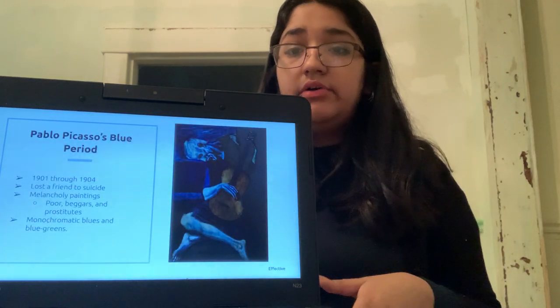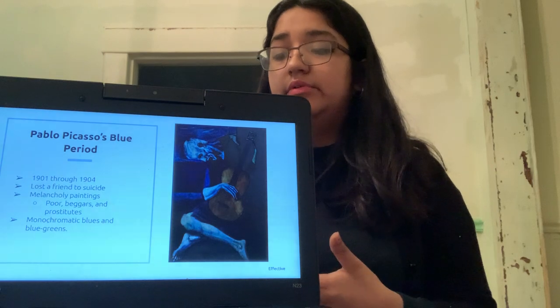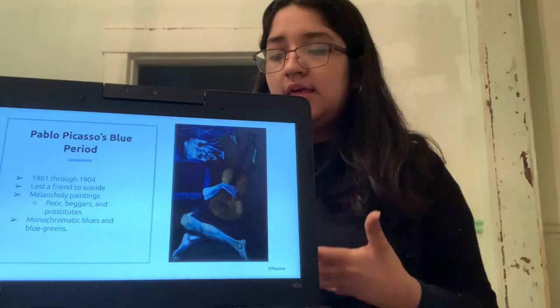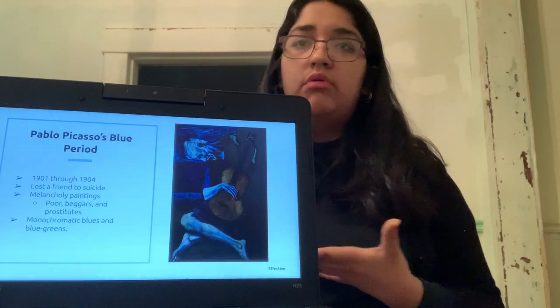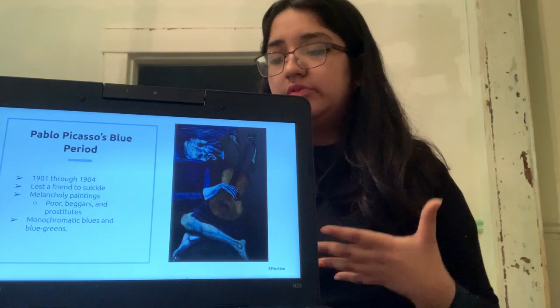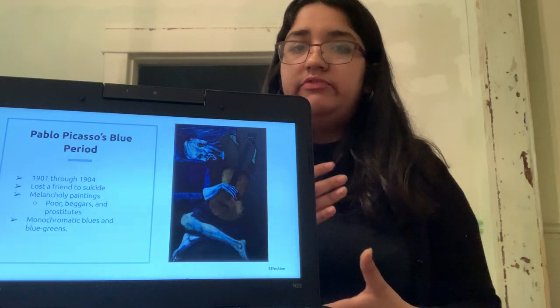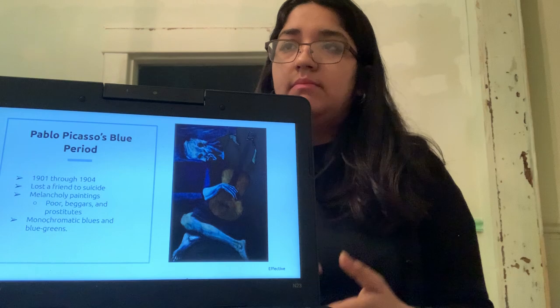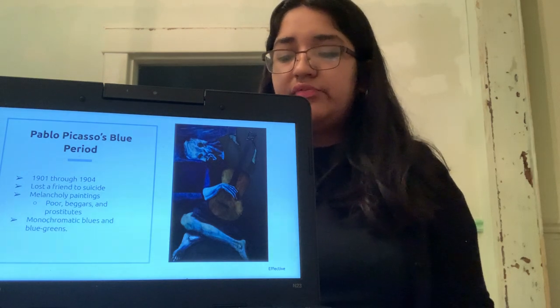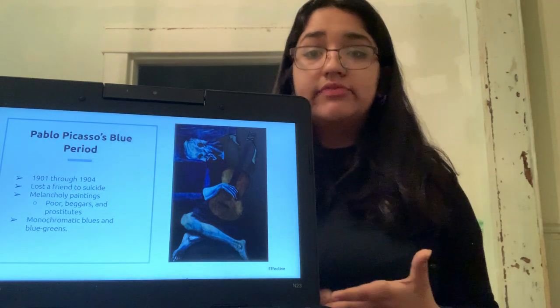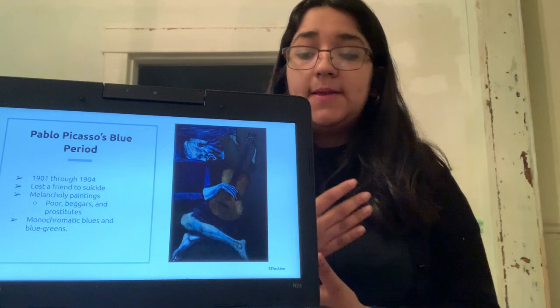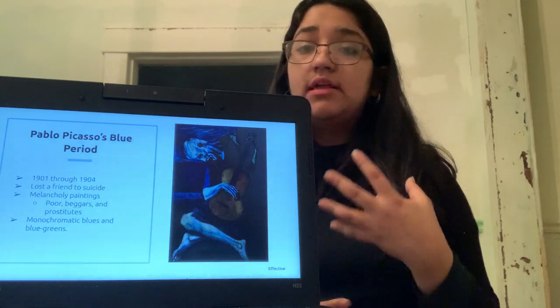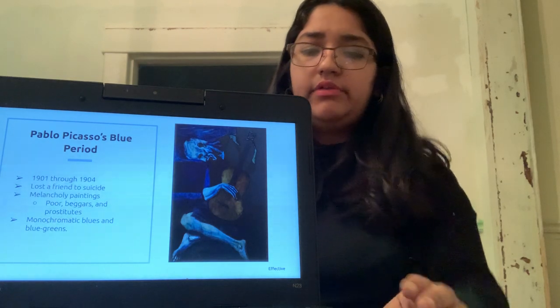Pablo Picasso's blue period is a good example of melancholy paintings. He depicted the poor beggars and prostitutes through the use of monochromatic blues and greens. It was from 1901 to 1904 after he lost a dear friend to suicide. He conveyed what he was feeling through paintings of blue and green hues.